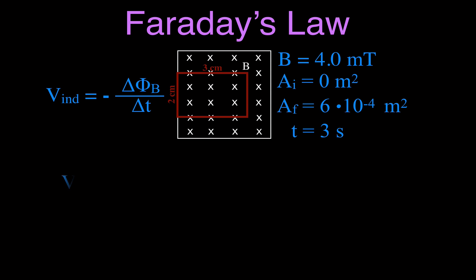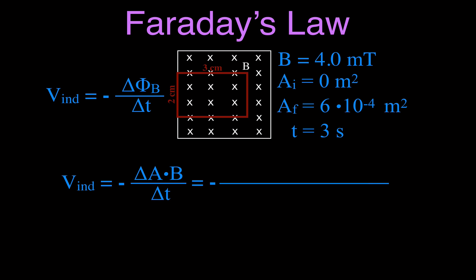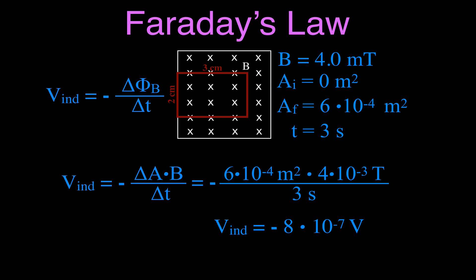Using Faraday's Law with emphasis on changing the area — the magnetic field strength stays constant at 4 milliteslas. The change in area is 6 times 10 to the minus 4 square meters, since we started at zero and ended at that value. Multiply by the constant magnetic field strength and divide by 3 seconds. The induced voltage in this case is minus 8 times 10 to the minus 7 volts.